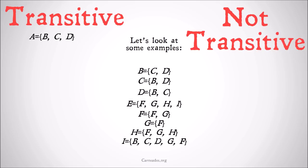Let's take a look at A. A is transitive. Why? Well, for it to be transitive, B, C, and D all have to be subsets of A. B is defined as the set of C and D. C and D are both members of A, so B is a subset of A. C is defined as the set of B and D. B and D are both members of A, so C is also a subset of A. D is defined as B and C. B and C are both members of A, so D is a subset of A. So B, C, and D are all members of A and subsets of A — A is transitive.